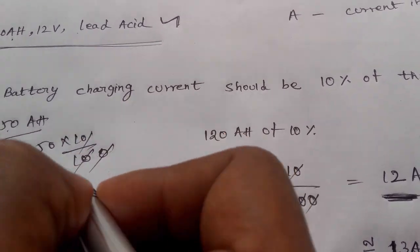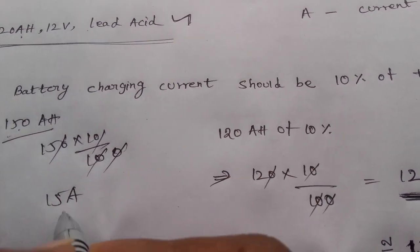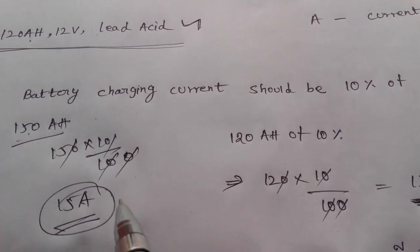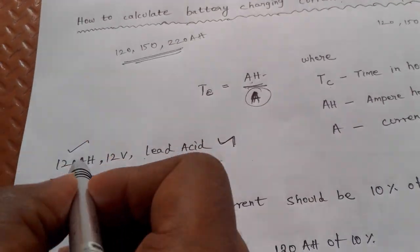So 120 times 10% equals 12A. 12A is the charging current.